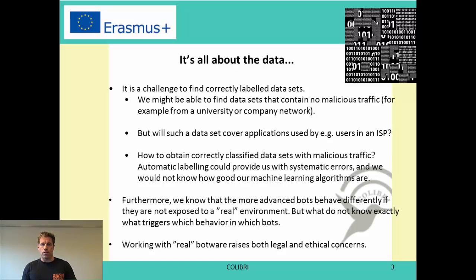Looking at datasets for benign traffic — non-malicious traffic — we might find datasets we believe contain non-malicious traffic, for example from a university or company network with good security and controlled devices. But the question is whether this dataset will cover the applications used by other users, for example at an ISP. The trickier question is how to obtain correctly classified datasets with malicious traffic. Even if we get a dataset from an ISP or a user, how do we know for each flow whether it is malicious or non-malicious?